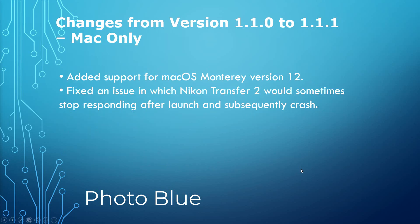As for version 1.1.1, as I mentioned it was only for Mac, so you only saw this if you were using a Macintosh. Macintosh now has version 1.1.2, so this version is kind of obsolete at this point. But it added support for Mac OS Monterey version 12 if you're running that version of the OS, and it fixed an issue in which Nikon Transfer 2 would sometimes stop responding after launch and subsequently crash. That fix is also included in 1.1.2 of course.